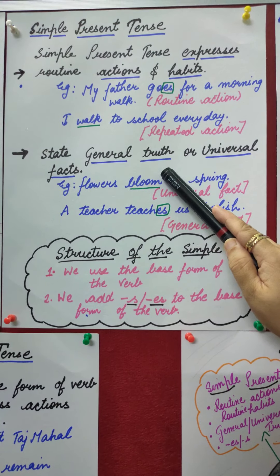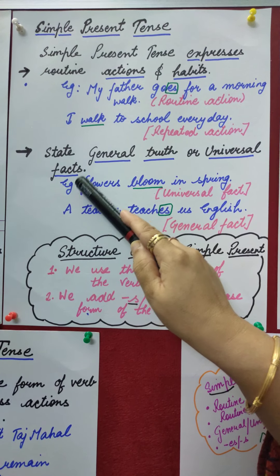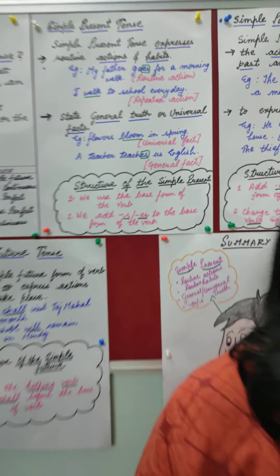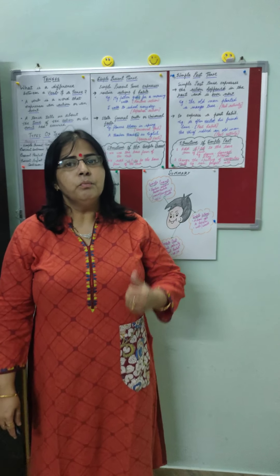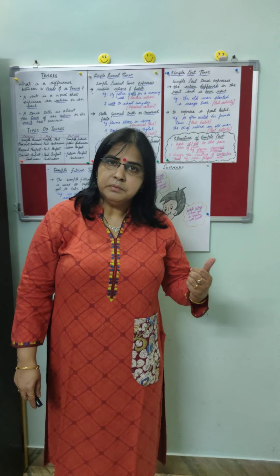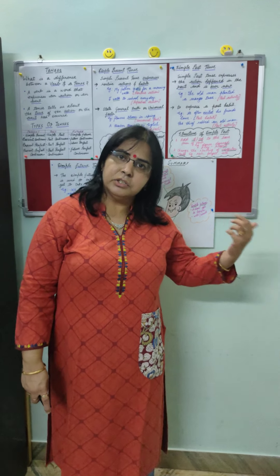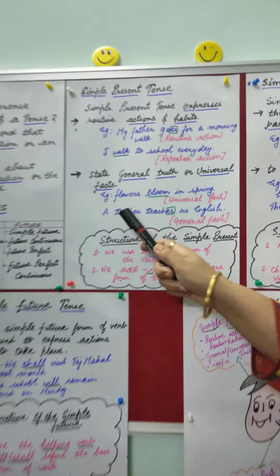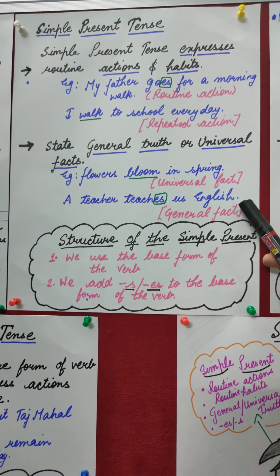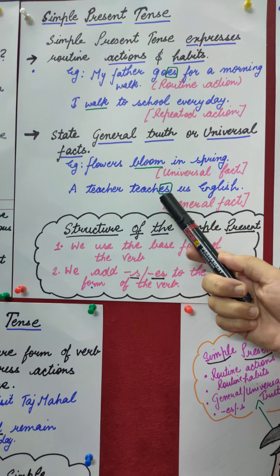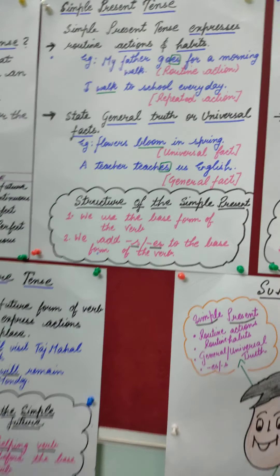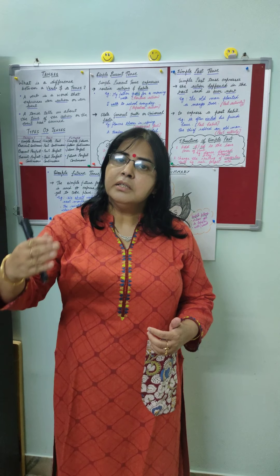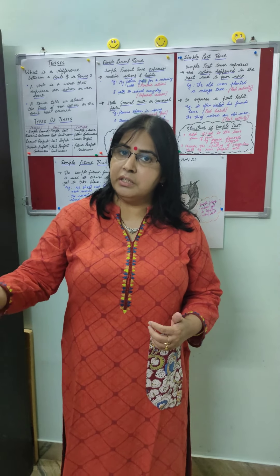Simple present tense also expresses general truth or universal facts. For example, 'Flowers bloom in spring' — this is a universal fact. 'The earth revolves round the sun' — this is also a universal fact which cannot be changed. Another example: 'A teacher teaches us English' — this is a general fact. So simple present tense expresses routine actions, habits, universal truths, and general facts.